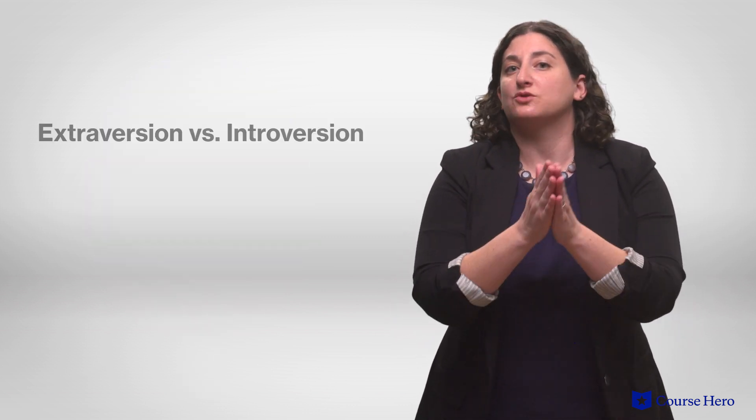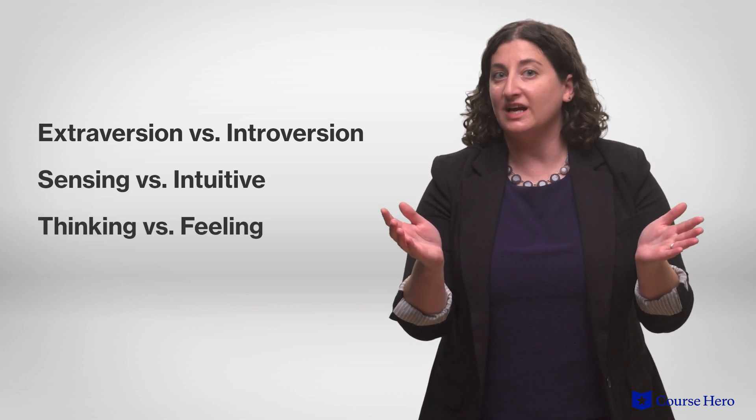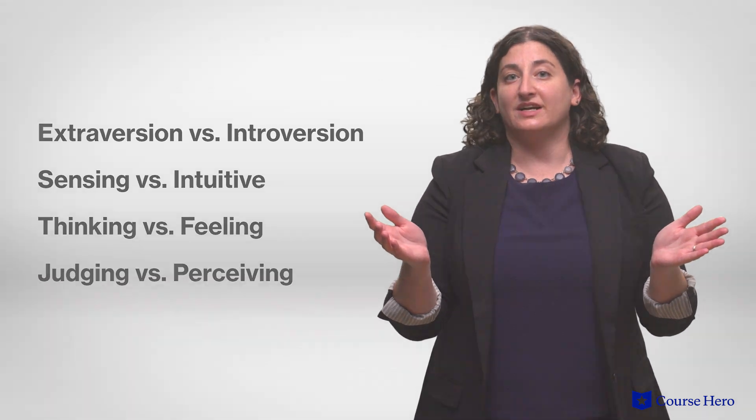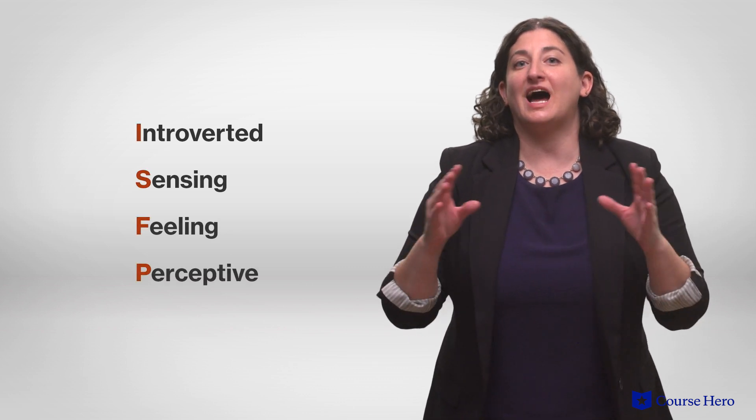One well-known test is the Myers-Briggs Type Indicator, or MBTI, which you might be familiar with if you've ever taken an internet quiz. This test sorts people according to Carl Jung's theories of personality, leading them to be categorized along a continuum of extroversion and introversion, sensing versus intuitive, thinking versus feeling, and judging versus perceiving. These are combined to create 16 different personality categories titled by their corresponding acronym. So someone who is introverted, sensing, feeling, and perceiving would be an ISFP.